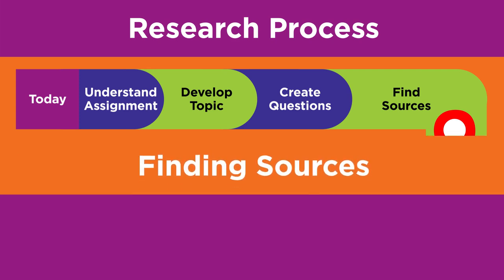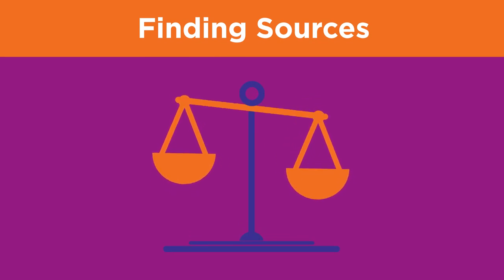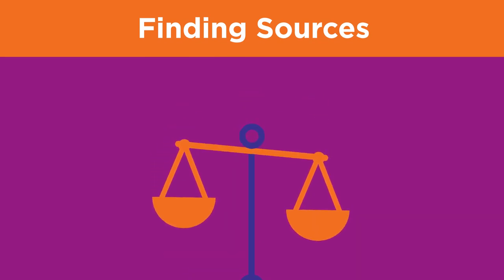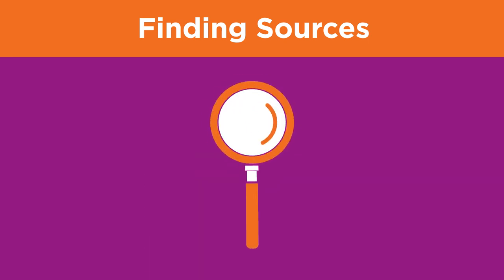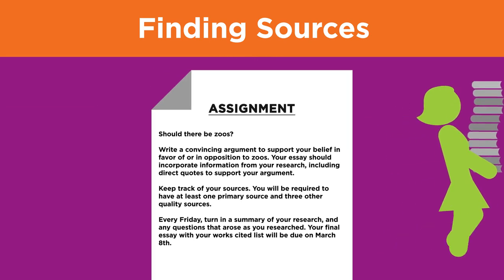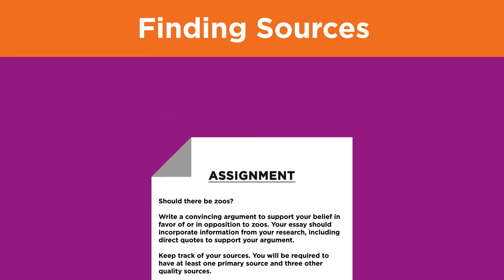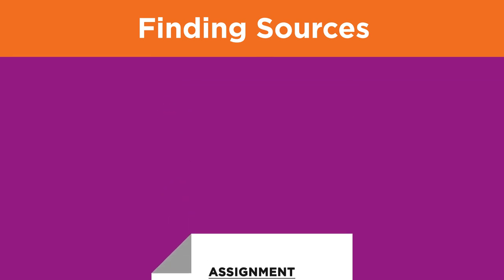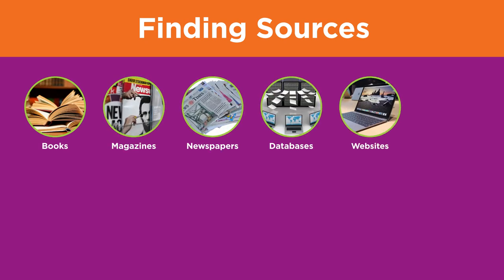You will need strong evidence to support your argument and some understanding of the opposing argument. For this, you'll need high quality sources. Do you know the best way to find the sources you need? If not, plan to ask a librarian, and always bring your assignment sheet when asking for help. Look closely at what types of resources you need to use: books, magazines, newspapers, databases, websites, people.